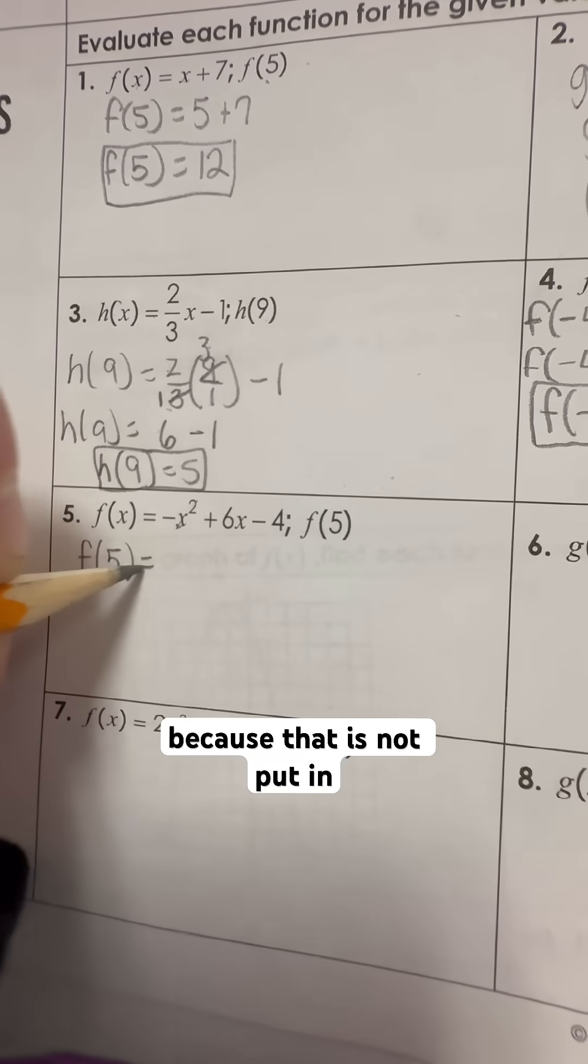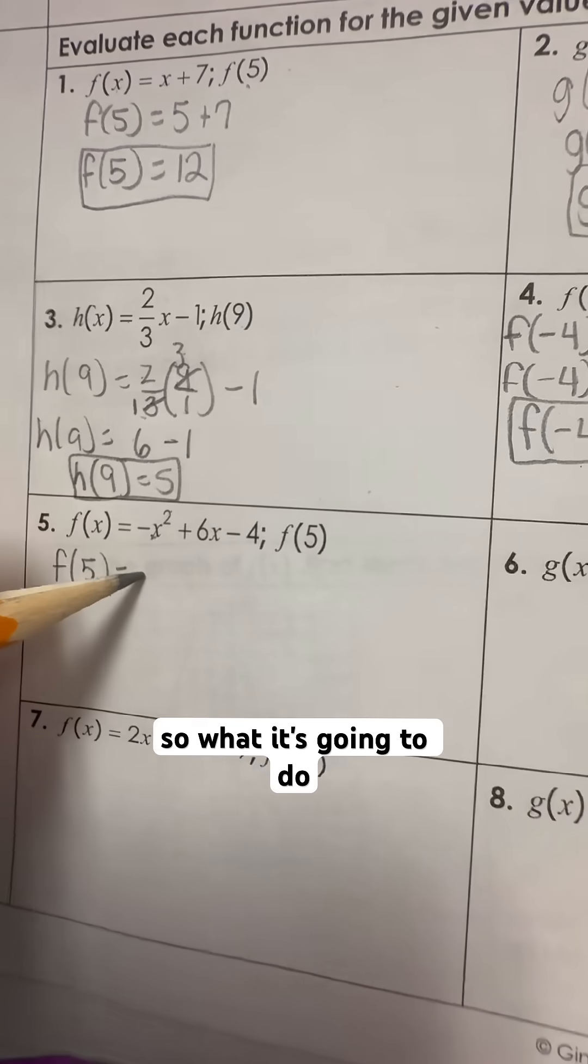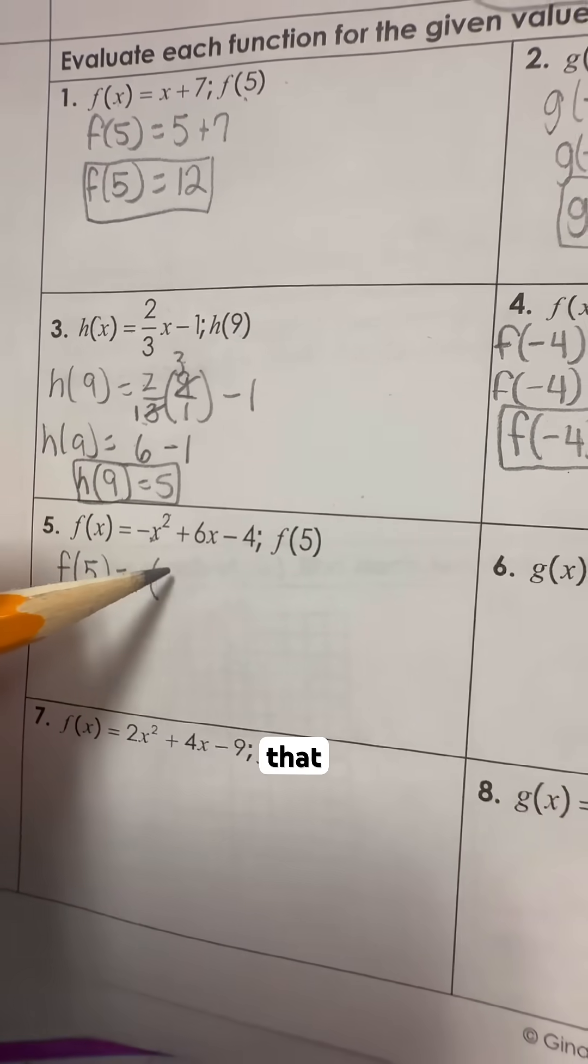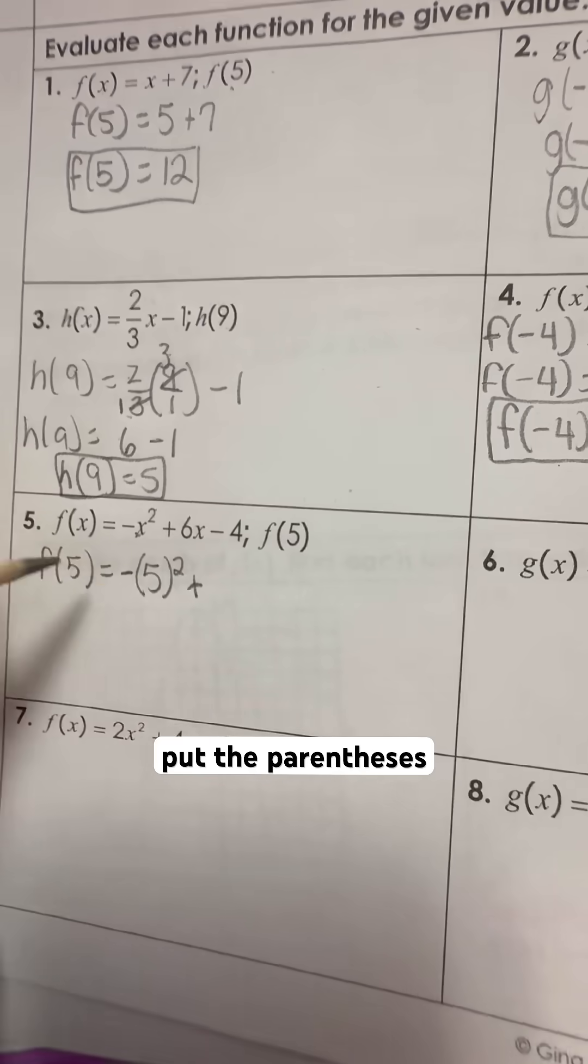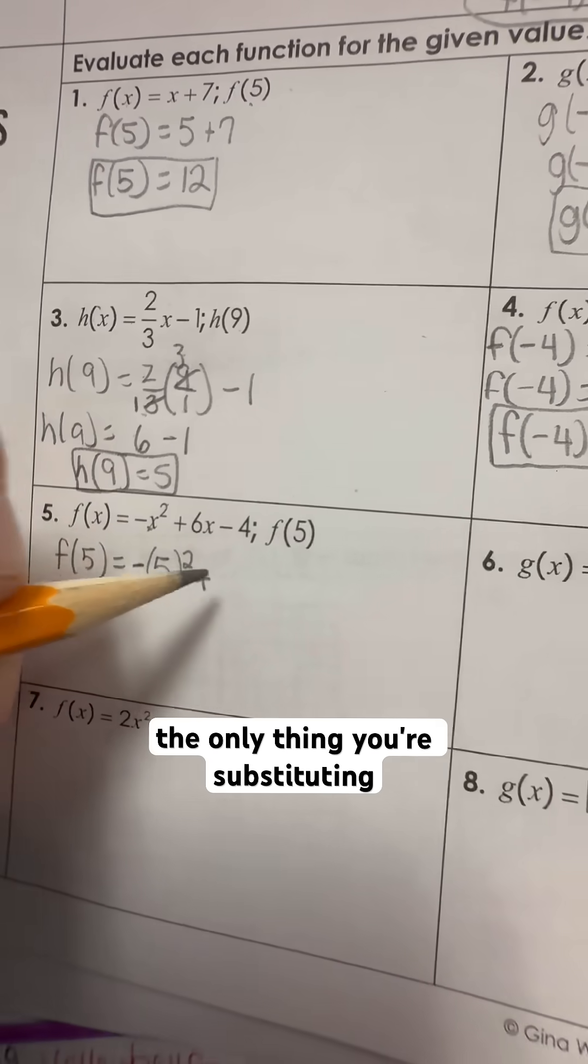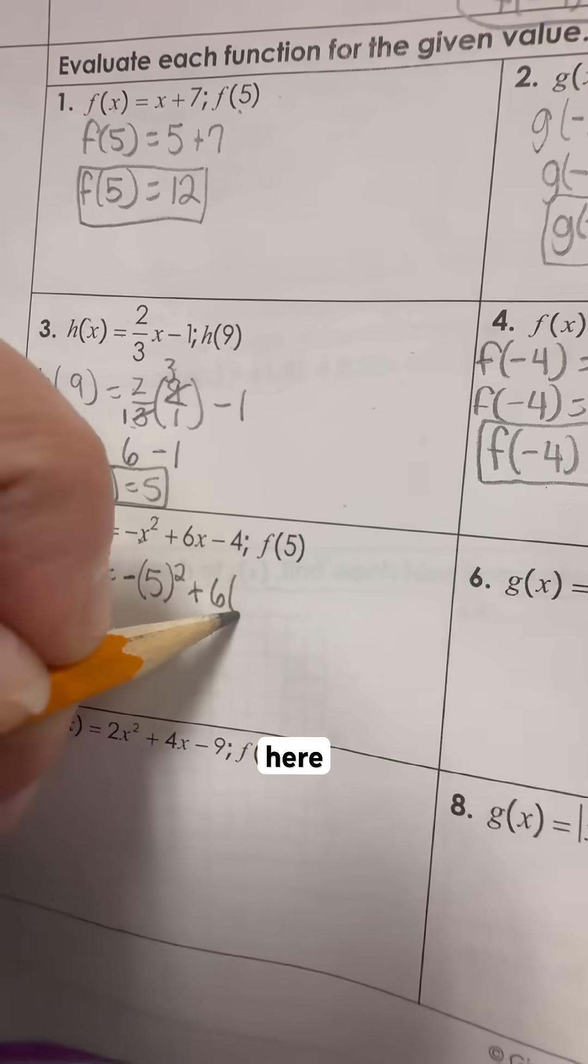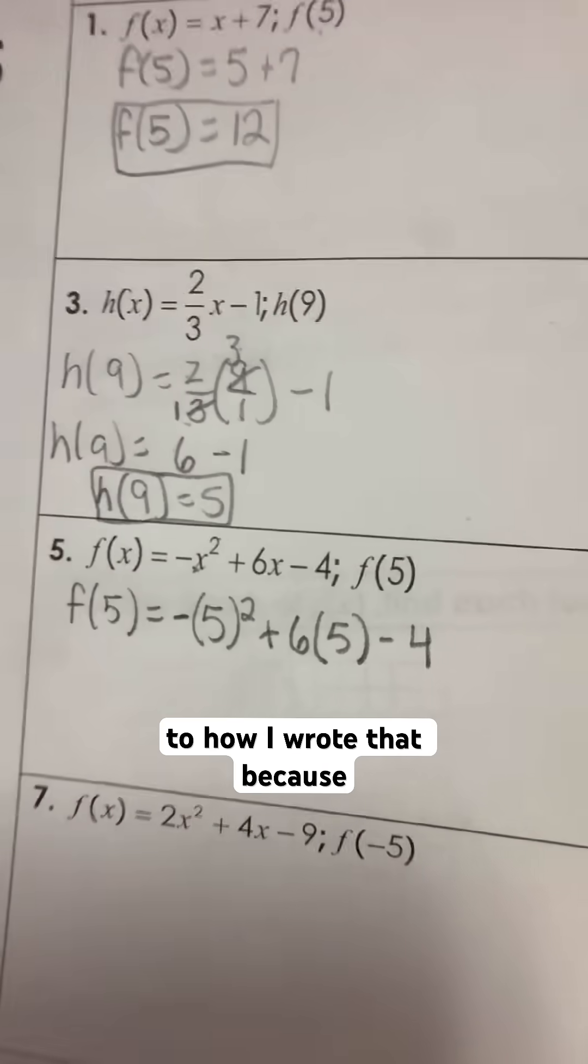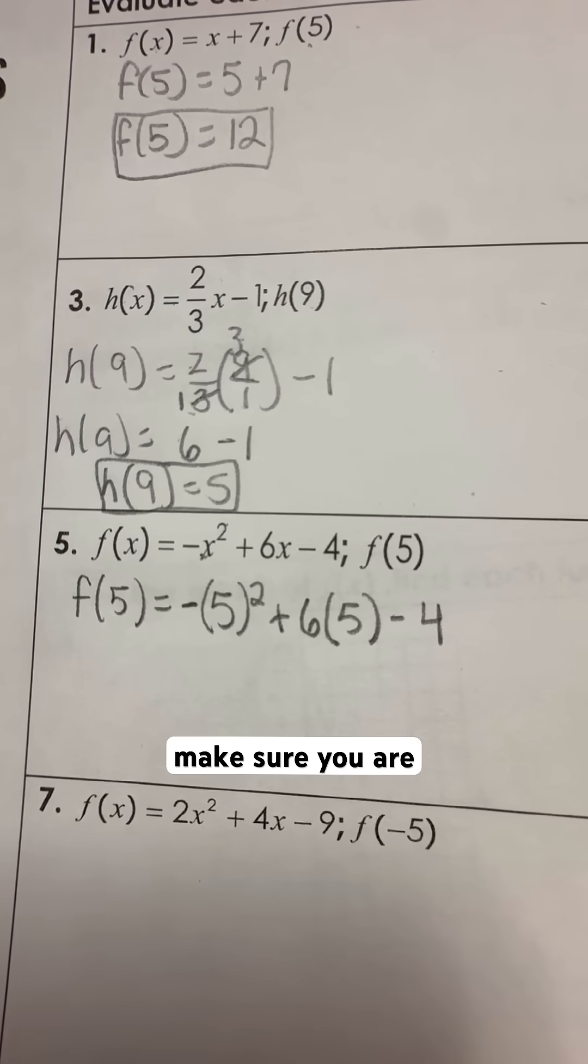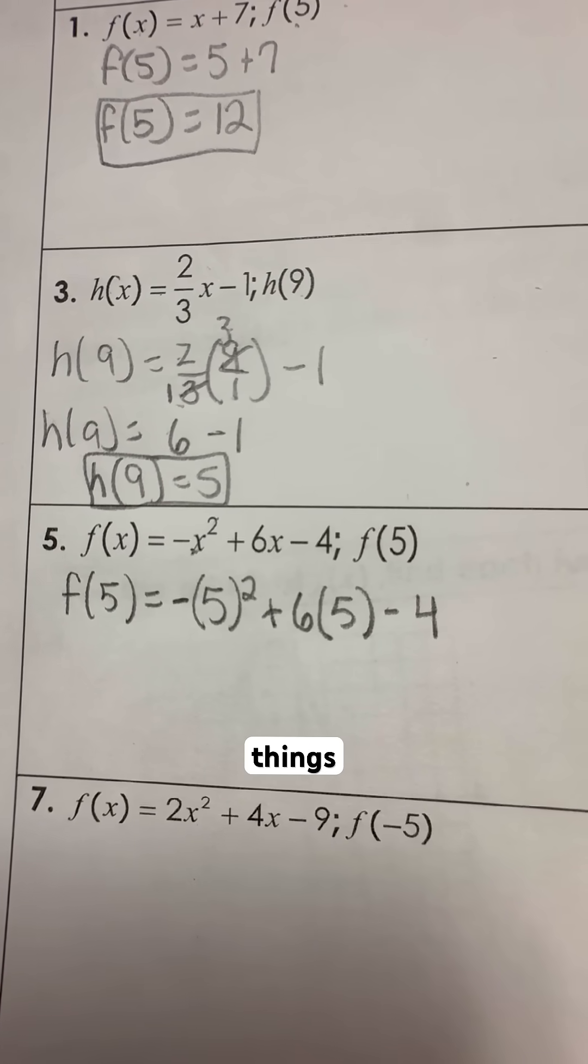So when we replace that 5 there, you have to be careful because that is not put in a set of parentheses. So what it's going to do is you're going to replace that 5 here and then put the parentheses just around the 5, because that's the only thing you're substituting. And then here you're going to just substitute it right here. Again, pay attention to how I wrote that.